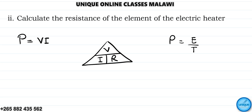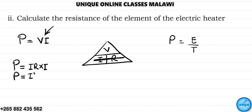Substituting voltage equals IR into the power formula, power equals I times R times I, which gives us power equals I squared times R. That is the formula we will use.